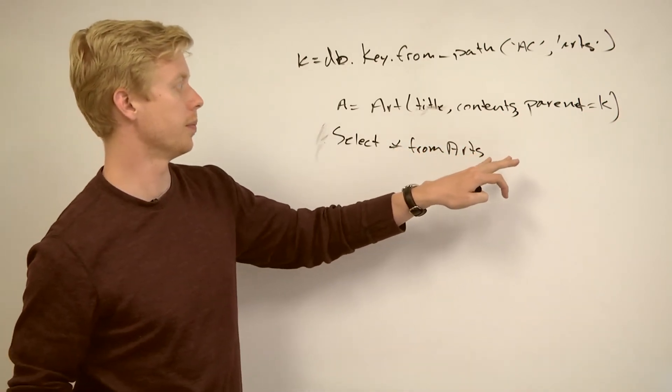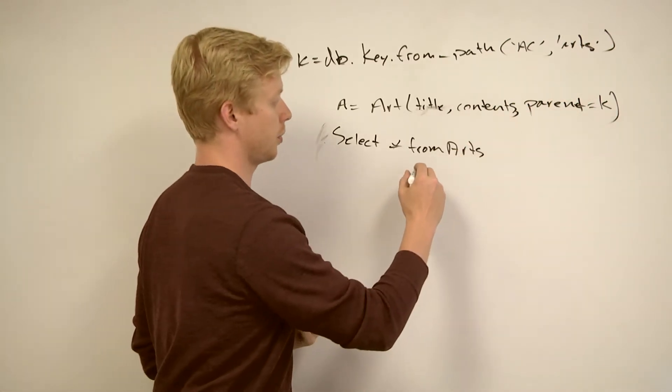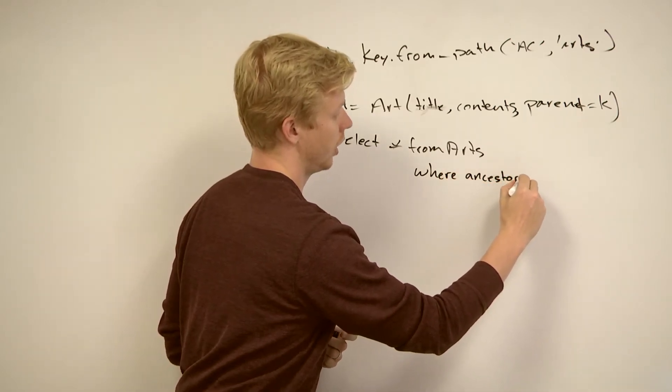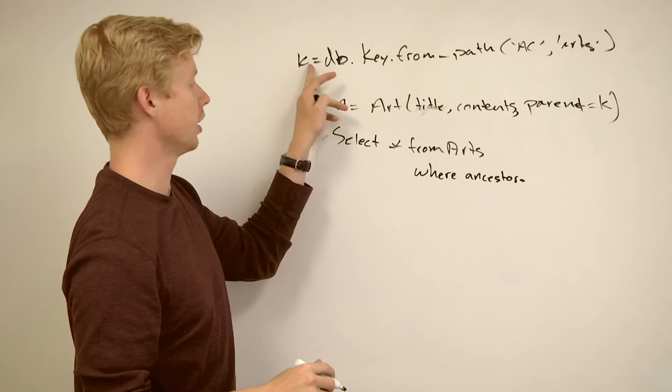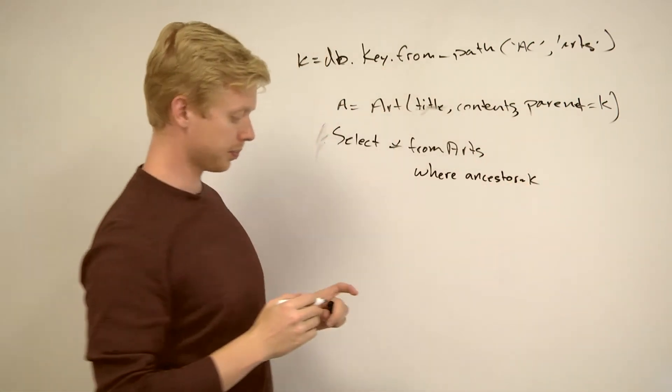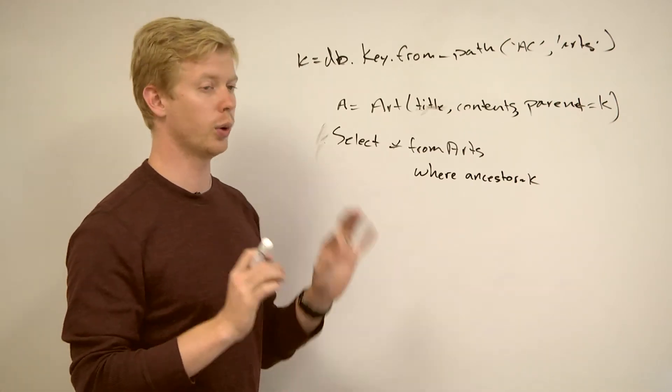and then one of the constraints on this query is where ancestor equals something. And in this case where ancestor equals this k, this key.